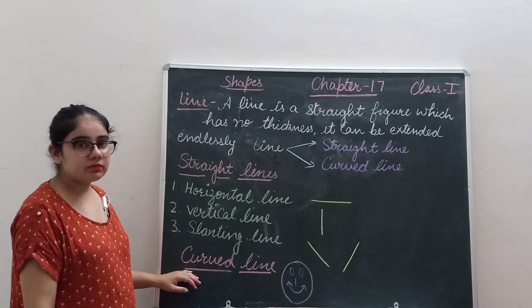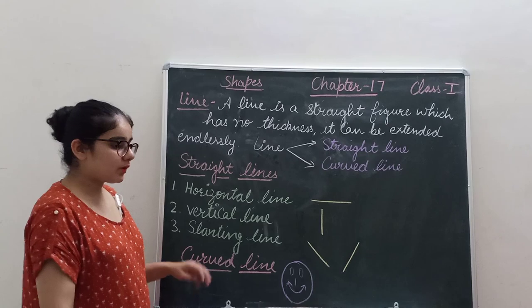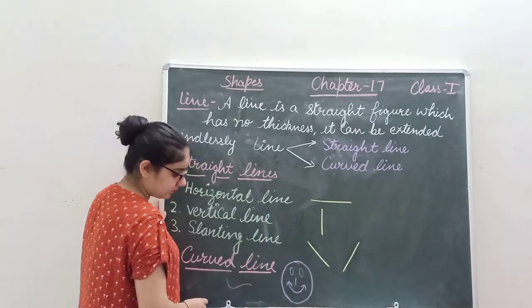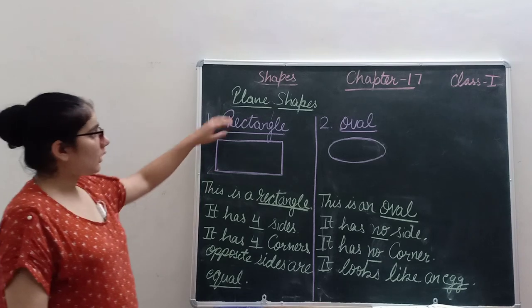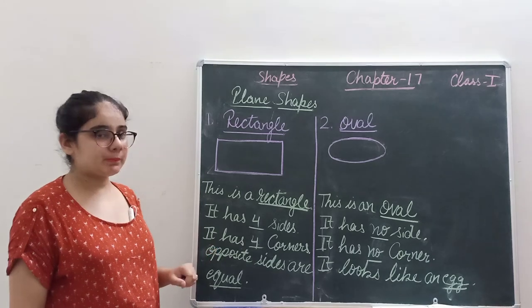After that, curved line. Curved lines can be drawn like this. Now come to plane shapes. Plane shapes are those shapes which we can easily draw on our paper.